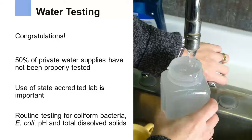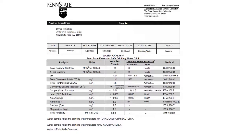We suggest that all private water system owners consider testing their water annually for coliform bacteria and E. coli bacteria. Other tests like pH and total dissolved solids should also be done every few years. Your water test results include a table similar to the one shown here. You may have more than one page of results depending on how many tests you ordered from the lab.